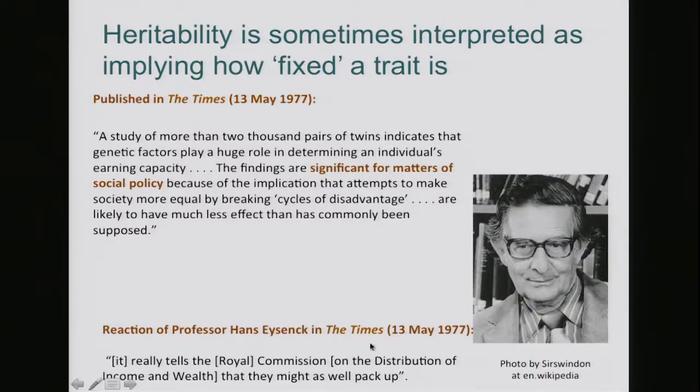We might think this is a journalist making kind of a rookie mistake — not something that really sophisticated scientists would ever do. Well, here's a quote from a very prominent and deservedly prominent psychologist that actually accompanied the Times article. Hans Eysenck is one of the most famous individual differences psychologists of the 20th century. He made many important contributions to the field. But look what he says: it really tells the Royal Commission on the Distribution of Income and Wealth that they might as well pack up. Income is heritable, therefore nothing we can do about it — it's in your genes. Not the case.